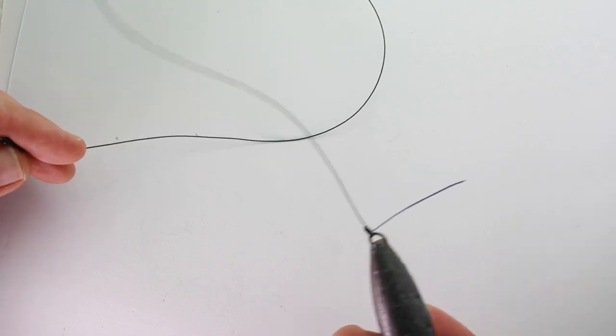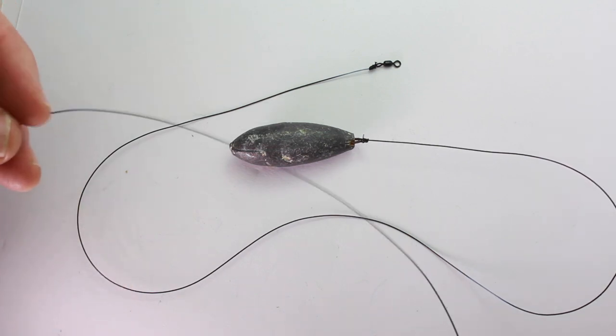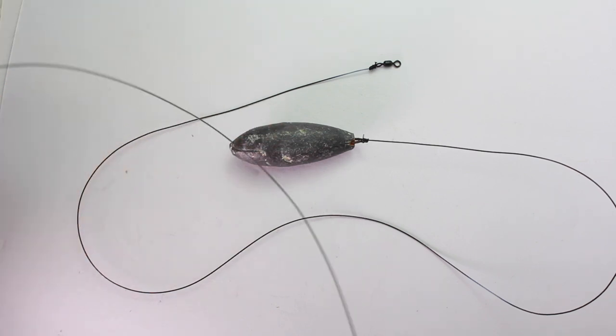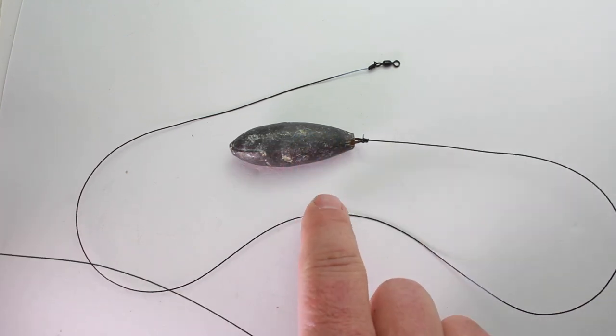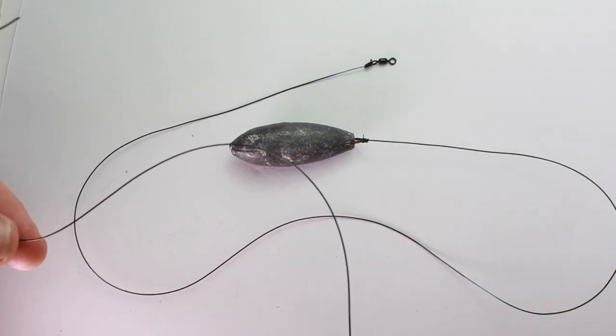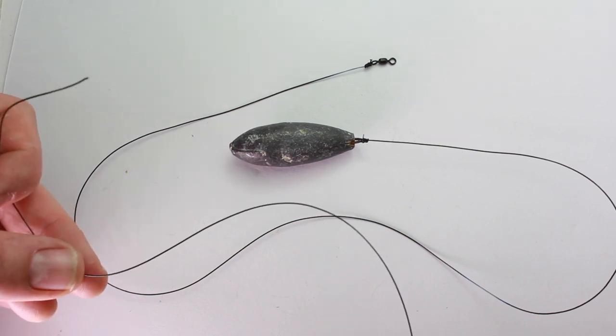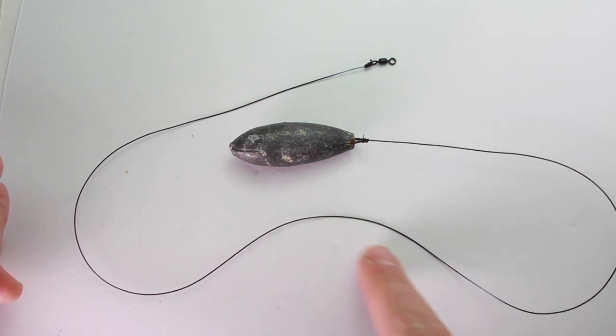In front of us we've got the lead attached to the swivel on the lower breaking strain line of 20 pounds. Now in my hand, I've got 25-pound breaking strain. The difference being that if they both get hung up, it should be this one that snaps first, whether that's around a rock or stuck in a gully. This line here will be slightly shorter in length as well, normally about 15 to 18 inches.